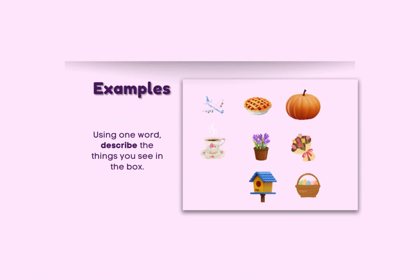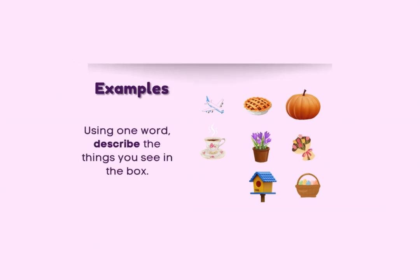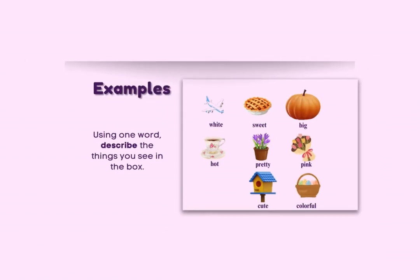Before we start, try this. Pause the video and use only one word to describe the things you see in the box. Do not use a noun — its name — but use a word to describe it. Here are some examples: a white airplane, a sweet pie, a big pumpkin, some hot tea, a pretty flower, a pink bouquet, a cute birdhouse, some colorful eggs.